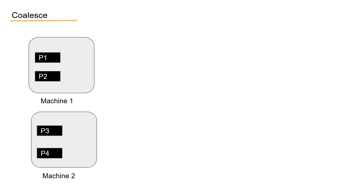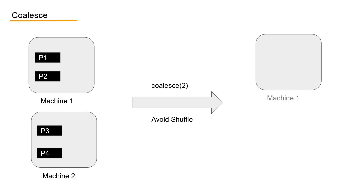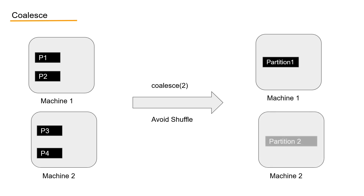Let's see if I call coalesce instead of repartition and I want to reduce the partition to two. Coalesce will try to avoid the shuffle and will try to merge partitions on the same machine, and two output partitions will be created. This would mean the output partitions have uneven size.